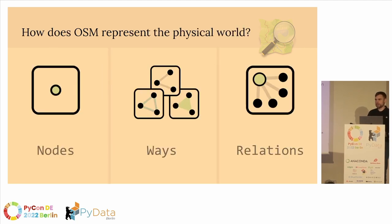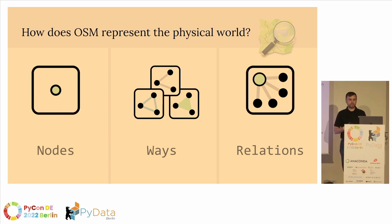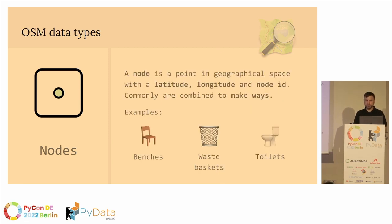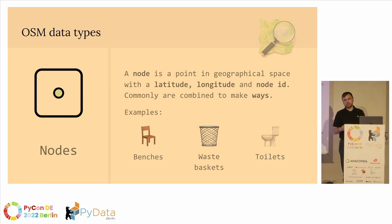Enough about the project itself — let's get into the data types. In OSM, OpenStreetMap, there are primarily three different data types: nodes, ways, and relations. First off, think of a node as a point — a point in geographical space that has latitude, longitude, and a node ID. Some common examples of what these are include park benches, wastebaskets, toilets — anything that's just a simple XY coordinate on a map.